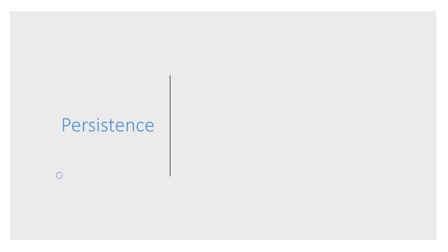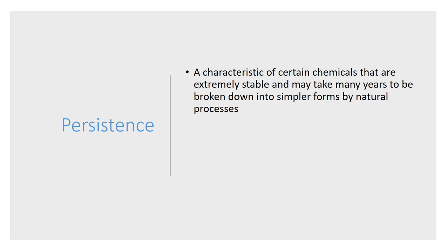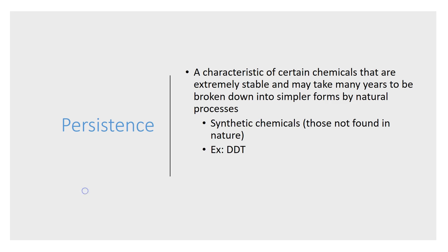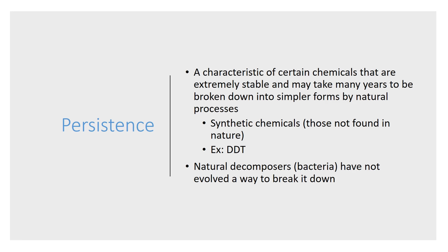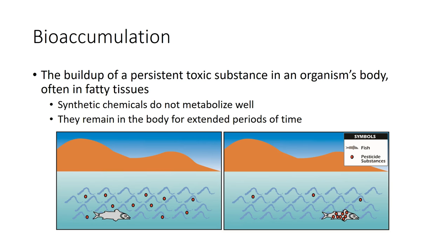Some chemicals — particularly synthetic chemicals — when they get out into nature, they don't break down very easily. DDT, for example, which we discussed in the pesticide unit, is a synthetic chemical that nature is not very good at dealing with, mostly because natural decomposers have not evolved a way to break it down as part of their natural selective process. When we have persistent chemicals that nature can't process, we can run into a process called bioaccumulation.